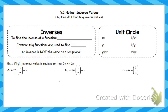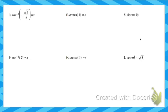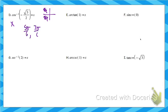Let's do a couple more. Cosine is the x-coordinate, so you're trying to find what angle gives you an x-coordinate of negative root 3 over 2. Cosine is negative in quadrant 2 and quadrant 3. The x-coordinate is root 3 over 2 at 5 pi over 6 and 7 pi over 6.